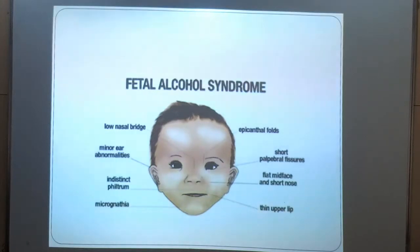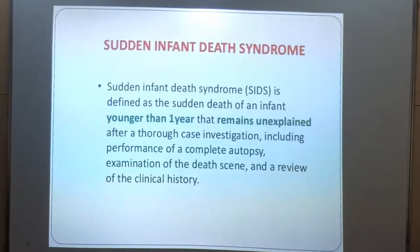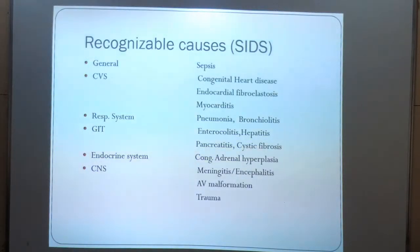This is a picture showing fetal alcohol syndrome, which occurs due to consumption of alcohol by the pregnant woman. There is a low nasal bridge, epicanthal folds, thin upper lip, and micrognathia. Sudden infant death syndrome is defined as sudden death of an infant younger than 1 year that remains unexplained after a thorough case investigation. The causes include sepsis, congenital heart diseases, respiratory system diseases like pneumonia, GIT diseases like hepatitis, endocrine system disorders, and CNS diseases like meningitis.